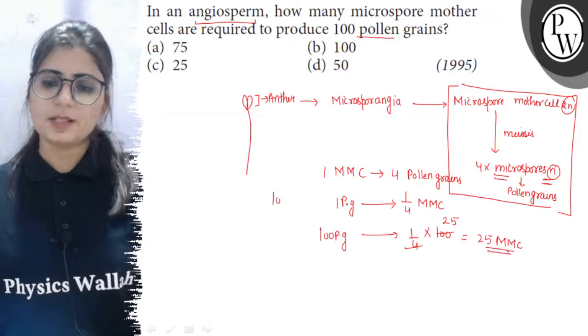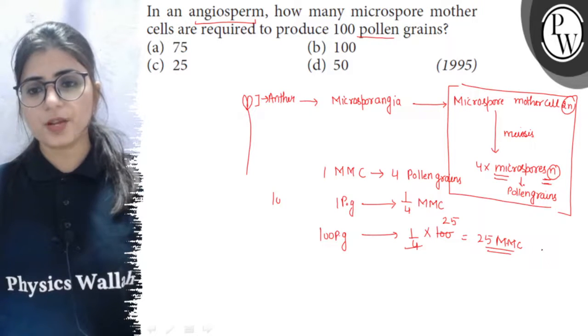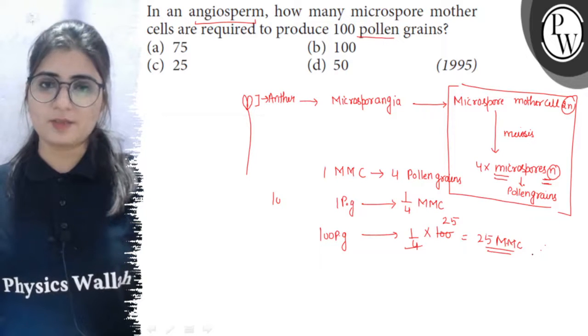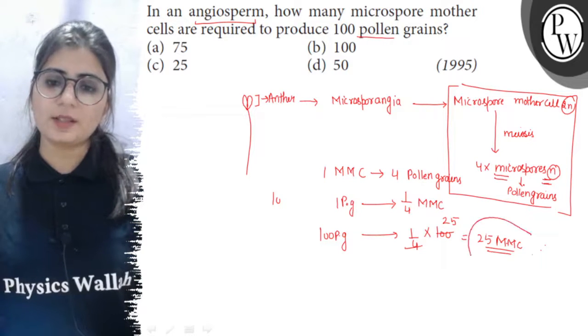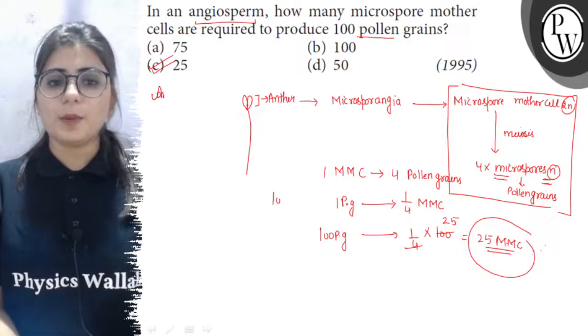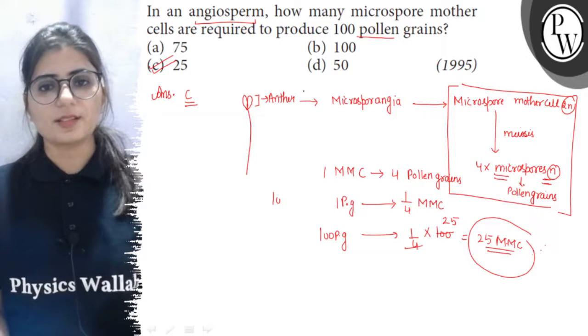So, we can see that one microspore mother cell gives rise to four pollen grains. So, 25 microspore mother cells will produce 100 pollen grains. So, to produce 100 pollen grains 25 MMC are required. So, option C is the right answer. All the best Bacho.